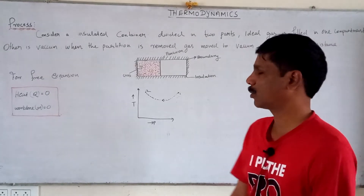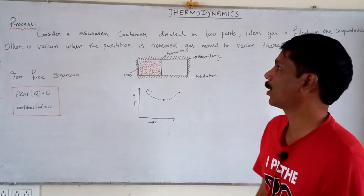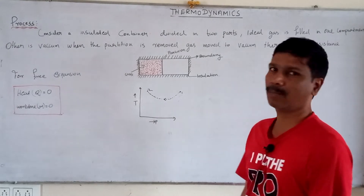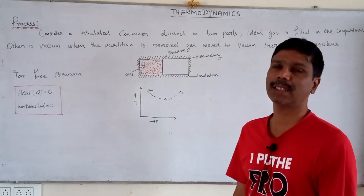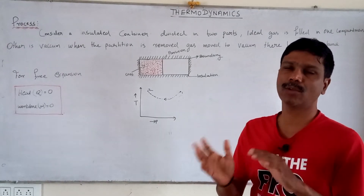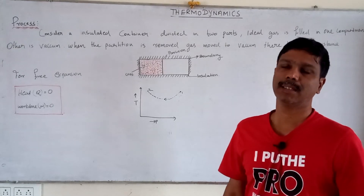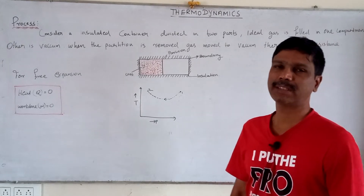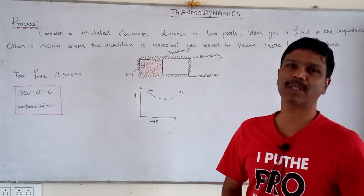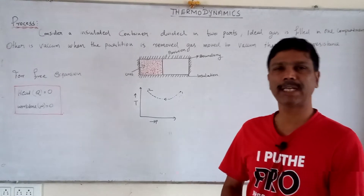Now we are going to see about the thermodynamic process. First of all, process means change of state — from state 1 to state 2. State 1 has certain properties, state 2 has certain properties. A change of state is called a process. State is a point which can be defined by any 2 thermodynamic properties.